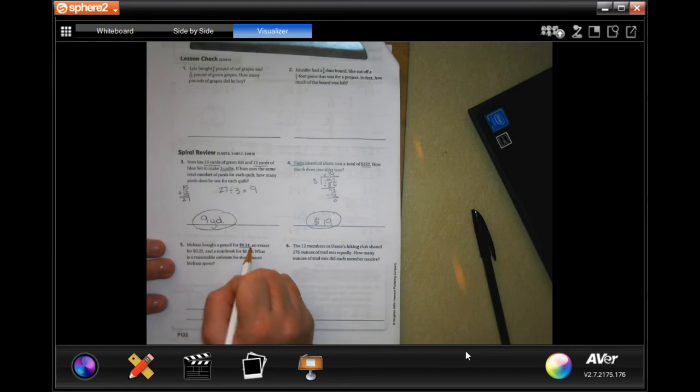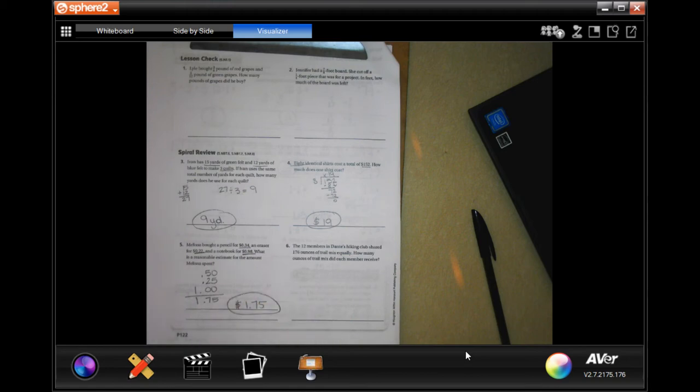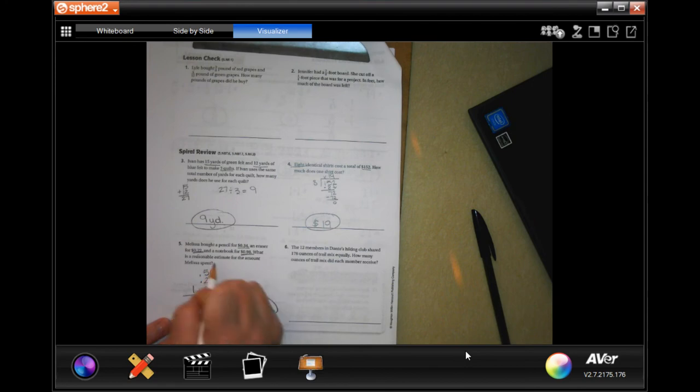Melissa bought a pencil for thirty-four cents, an eraser for twenty-two cents, and a notebook for ninety-eight cents. What is a reasonable estimate for the amount Melissa spent? Thirty-four cents, that's almost fifty cents, right? Twenty-two cents, yeah let's say twenty-five cents. We're going to go by quarters. And ninety-eight cents, let's go by one dollar. Lining up our decimal: five, seven, one - dollar sign, one seventy-five. You could have rounded the twenty-two cents to zero, which would give you one-fifty. It's an estimate, a reasonable estimate. As long as you're close, you're in the ballpark.